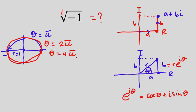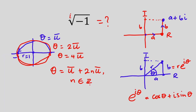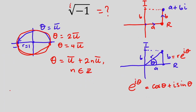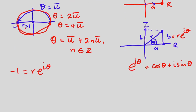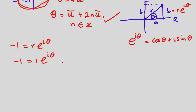Likewise if we continue all the way back to this point then theta is going to be 4 pi. So in either way we are going to have different values for theta, so we can write the general value for theta. In this case theta will be equal to pi plus 2n pi, where n is an integer. So from here we're going to have negative one is equal to r times e to the power i theta. We know that r is equal to one, so negative one is equal to e to the power i times (pi plus 2n pi).